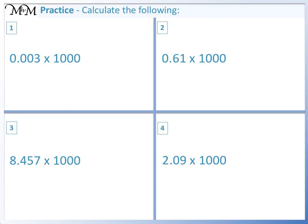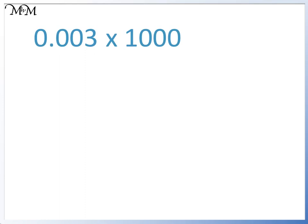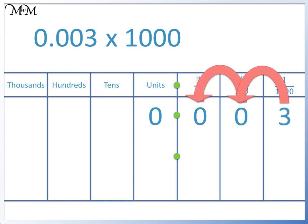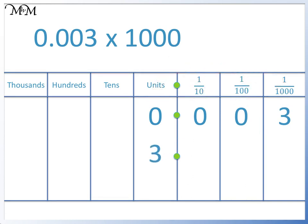Question 1: 0.003 times 1000. We move the 3 three places to the left. 0.003 times 1000 equals 3.